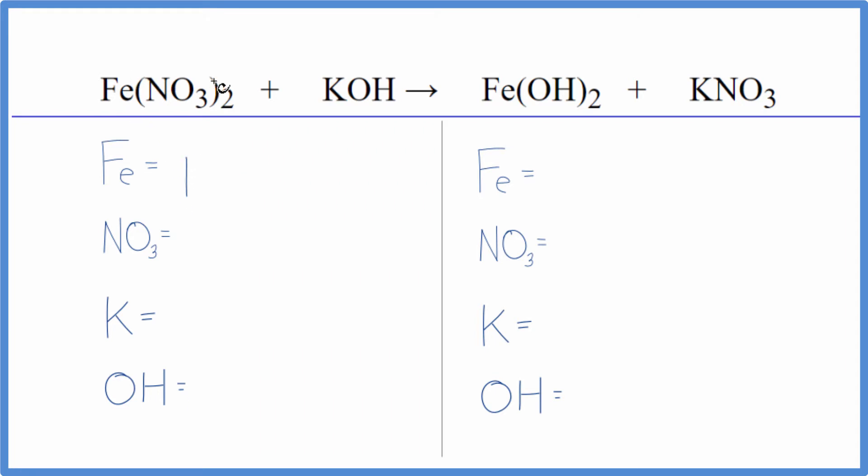We have one iron, but then this NO3, this is the nitrate ion, we have it here and here. It stays together. So we're just going to count that as one thing. I have one nitrate here times two. So I have two of those.